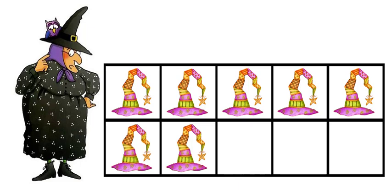How many hats are there now? One, two, three, four, five, six, seven, eight — seven. Or we could say five, six, seven. Sometimes we could even look at the tens frame and say there are seven hats, or you might notice three of the boxes are not filled. So there's seven hats.